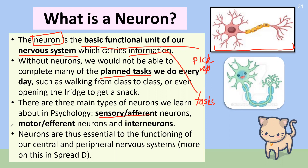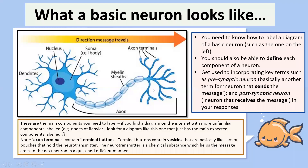The three types of neurons we're going to learn about are sensory, motor, and interneurons. The main reason we're studying neurons in this spread is because we need to understand that they are essential to the functioning of our central and peripheral nervous systems, which will be covered on Monday when we do Spread D. Now, you need to be able to understand not just the neuron's function but also the different components of the neuron.